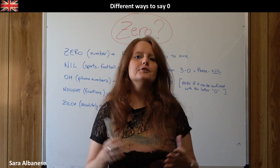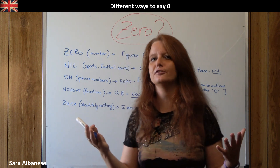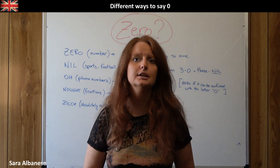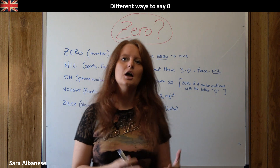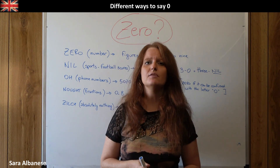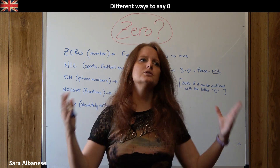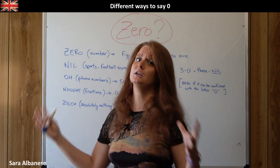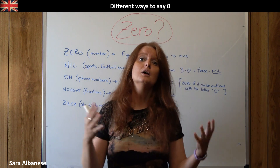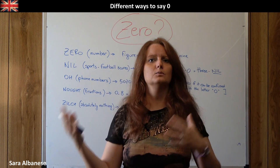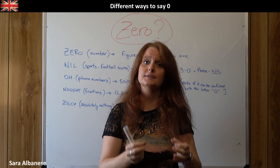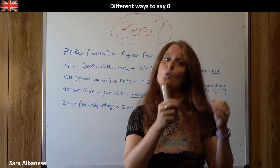There are different ways, and first of all I want to say that there is a prejudice out there that 'zero' is the word used mostly in British English while 'O' is used in American English. Well guys, it's not true, or anyway it's not completely true. It could have been so in the past. Obviously, talking about British English or American English is a generalization, but the truth is that there are specific situations and contexts in which we use one word or the other.